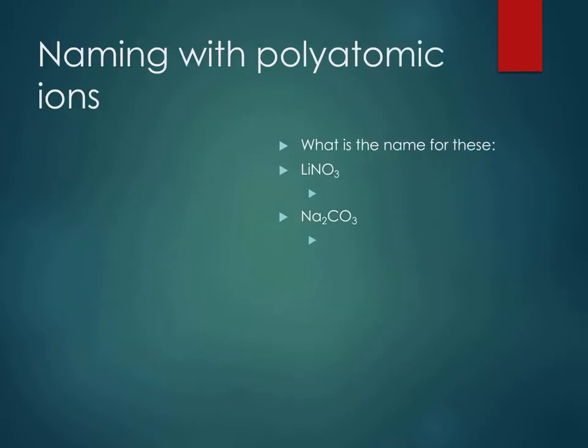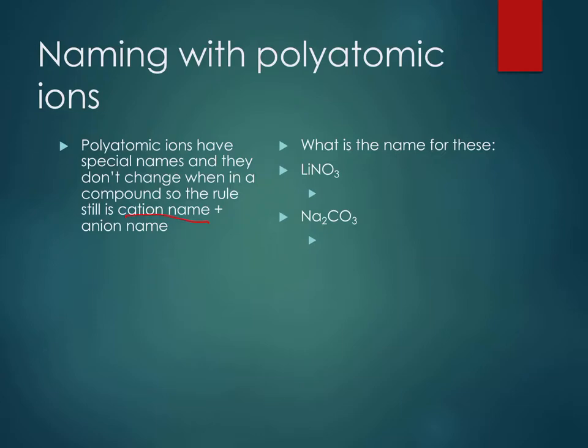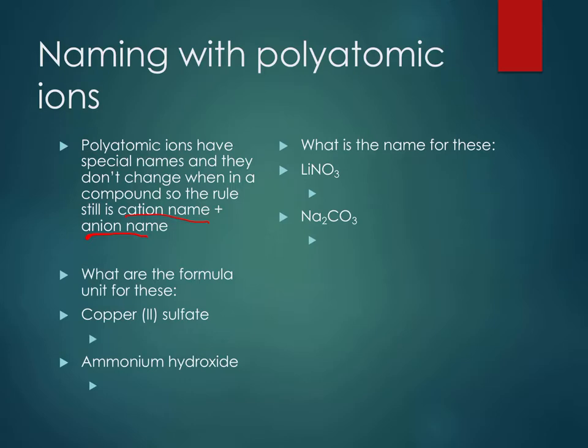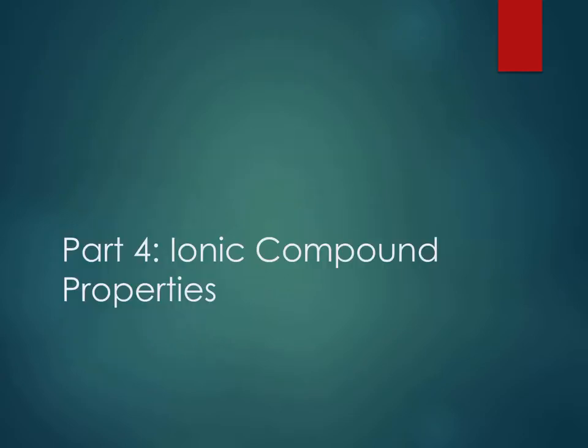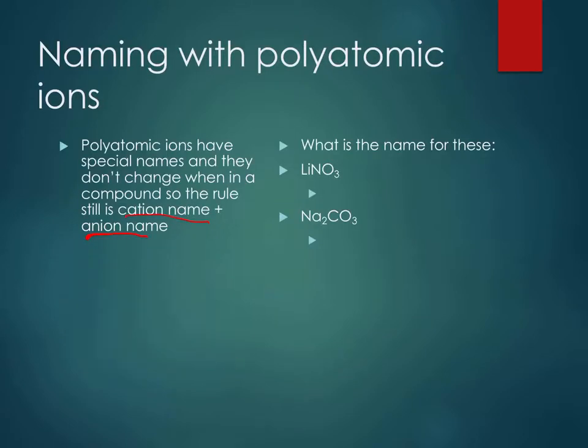When we name with these, it's the same idea as what we do with the other ionic compounds, the cation name and then the anion name. So take a moment and write out those names. Remember, you can look up the polyatomic ions. I don't expect you to memorize them. For this one, you should have gotten Li is lithium. NO3, you'd look that up, and that's nitrate. For the second one, Na is sodium. CO3 is carbonate.